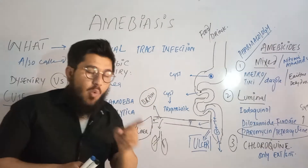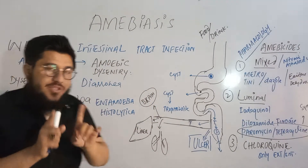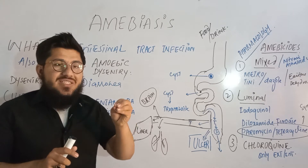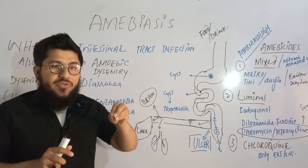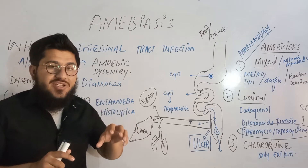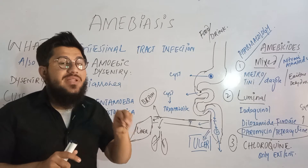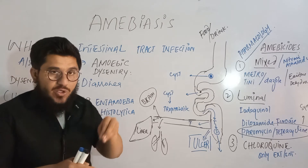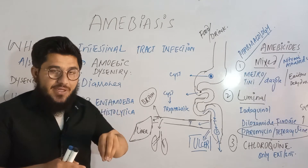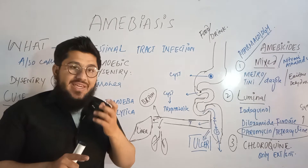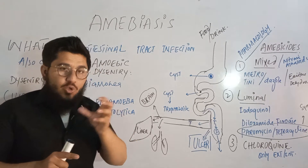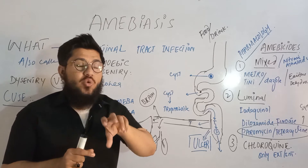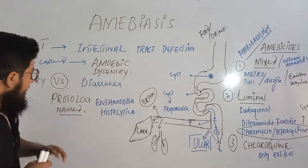Since we have the term 'dysentery,' let's briefly compare it with diarrhea. When stool passes in a liquid form — loose motion — very frequently, and that stool contains blood and mucus, it is called dysentery. If stool passes frequently in liquid form but without blood and mucus, that condition is known as diarrhea. In dysentery, loose motion is accompanied by blood and mucus.